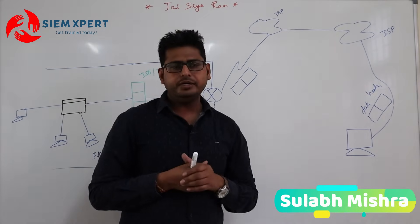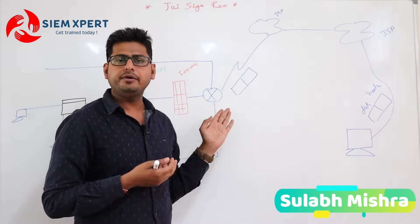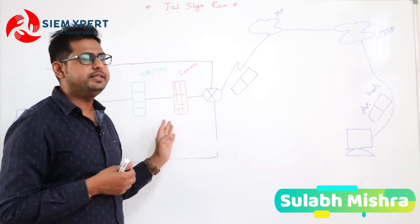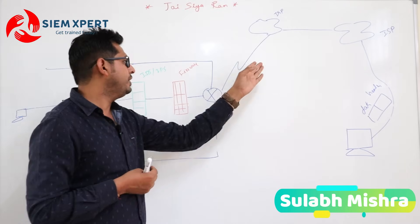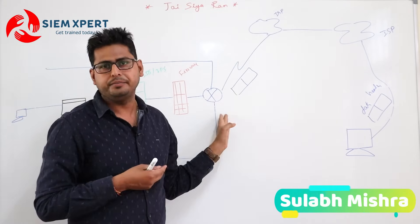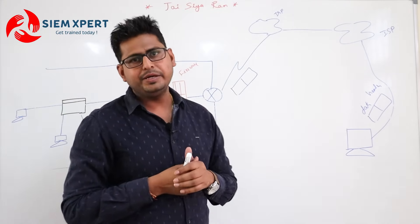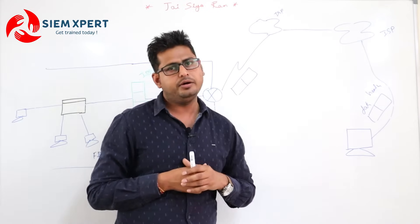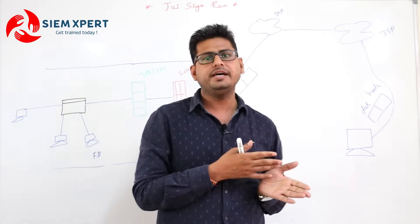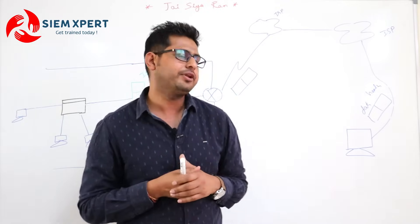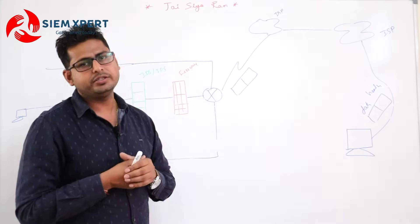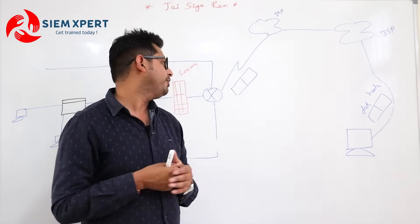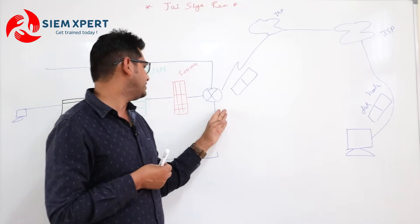Each and every device connected to the network records its activity in the form of events. Let's say a connection comes and hits the router. The router is a layer three device — it will record based on the IP address and route the connection. Along with routing, it records the activity: source IP, destination IP, and so on, in the form of logs.